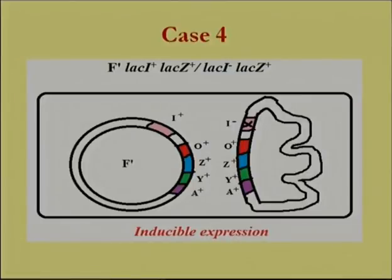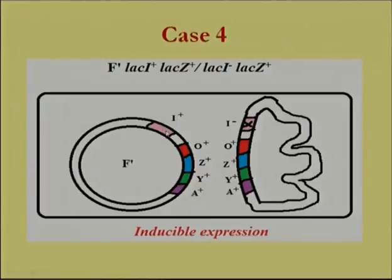Case 4: The prime factor carries wild-type lac I and lac Z; the bacterial chromosome has a mutation in lac I but wild-type lac Z. The functional repressor expressed from the prime factor is trans-acting and can bind to operators on both the prime factor and bacterial chromosome, exerting negative control. When lactose is absent, the repressor blocks expression; when lactose is present, it is removed. The phenotype is inducible in this merodiploid.